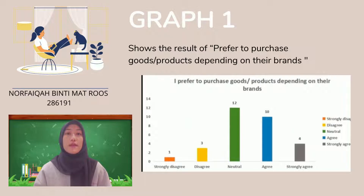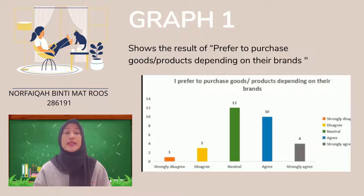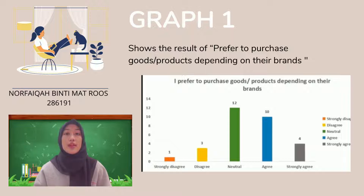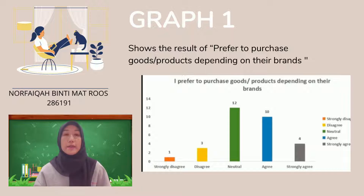Consumer behavior graph 1 shows the results of whether respondents prefer to purchase goods depending on brand. The highest number of respondents chose a neutral decision, at 12 out of 30 respondents. This is because consumers want comfort and satisfaction in their life, and if a brand consistently delivers a positive experience, consumers form the opinion that the brand is trustworthy, giving them peace of mind when buying.